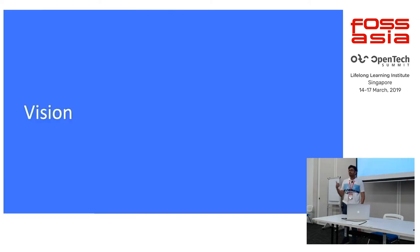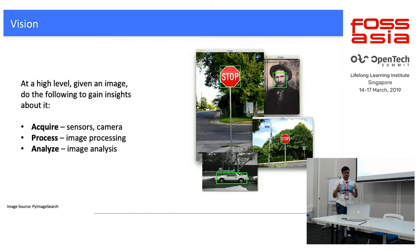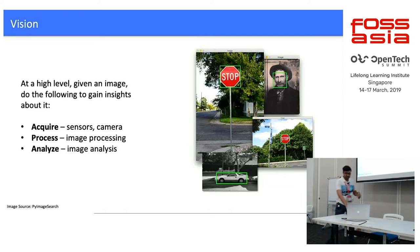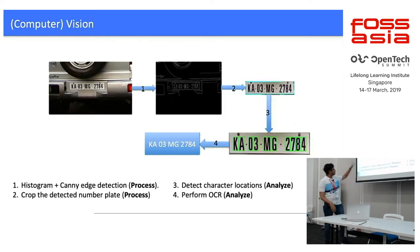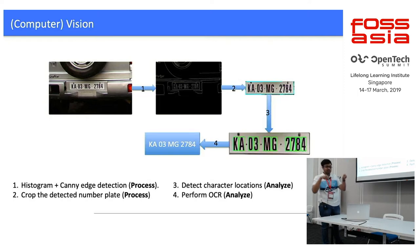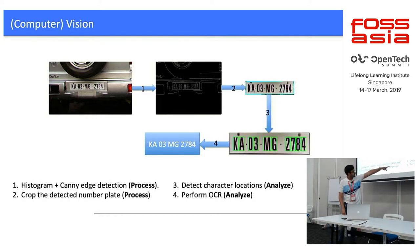We'll first talk about vision — computer vision — which has been a very active field for quite some time. You can summarize the entire CV process into three steps: you acquire an image from a sensor, process it, and then analyze it to get details. For example, in license plate detection, you apply Canny edge detection to detect edges, crop the rectangular part, detect characters, and then perform OCR.